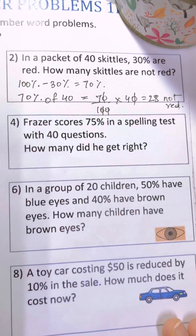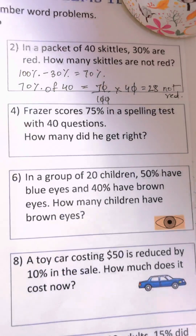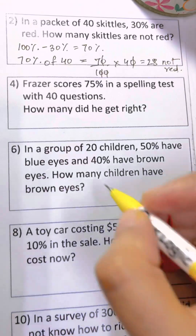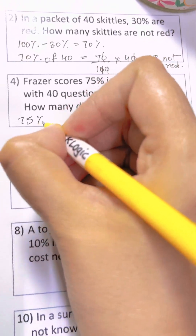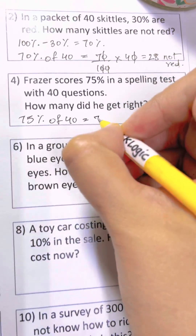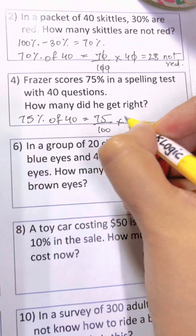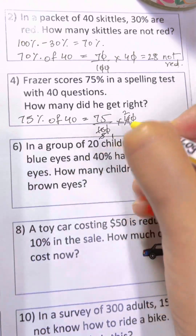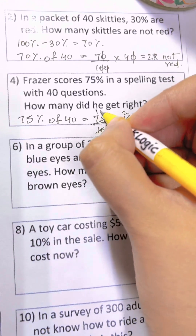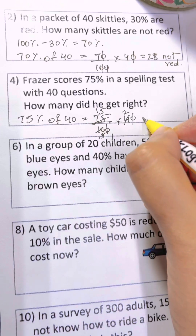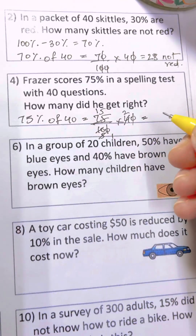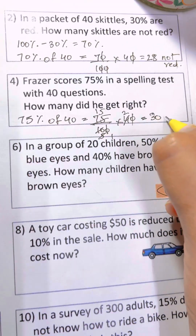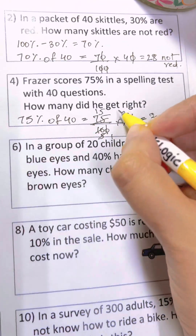Fraser scores 75% in a spelling test with 40 questions — how many did he get right? Question number four: 75% of 40. So 75 over 100 times 40, cross out the two zeros. 5 times 3 is 15, and 15 times 2 is 30. So Fraser got 30 questions right.